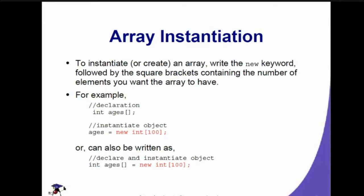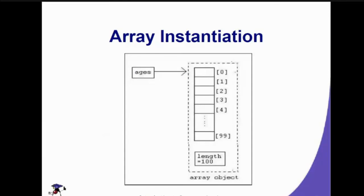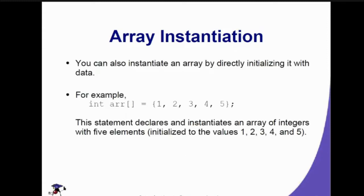Unlike with the declaration where square brackets can be placed anywhere after the data type, when instantiating, the array size goes after the data type in the new keyword — it cannot be moved around. So once an array is declared, it generates blocks of elements capable of accepting stored values in every element. You can also instantiate an array by directly initializing it with data, like: int r = {1, 2, 3, 4, 5} — and there is no need for a separate array size declaration since values are already provided.